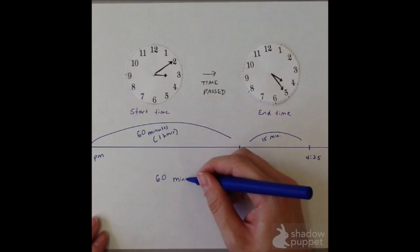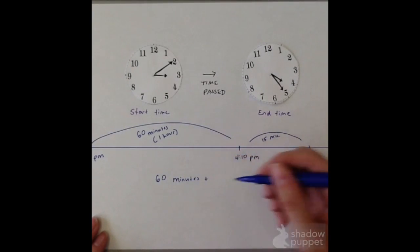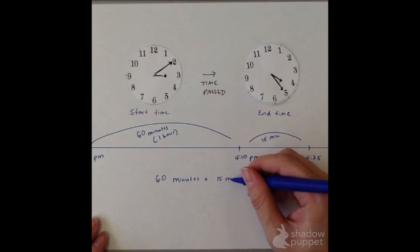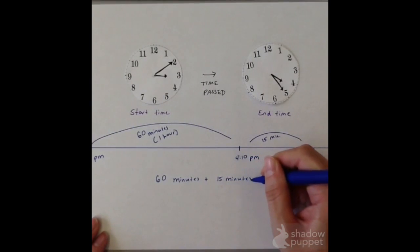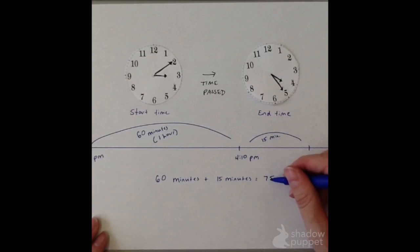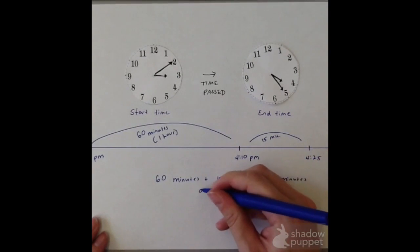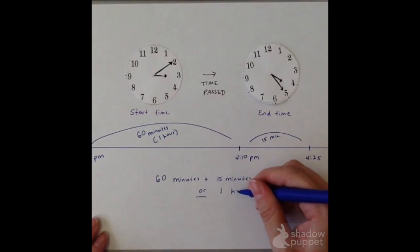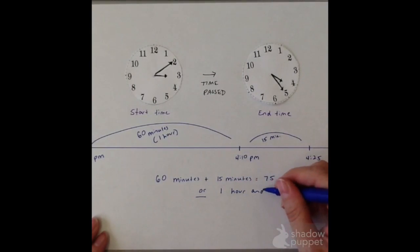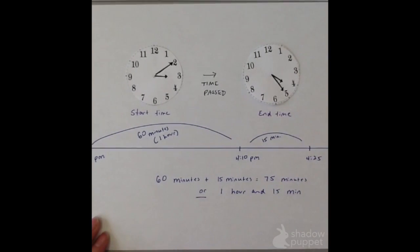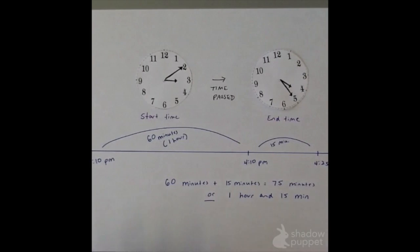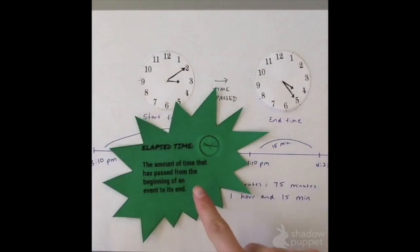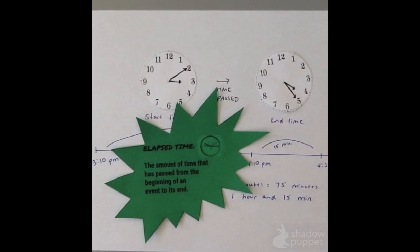So then I can take that 60-minute time segment and add that to 15 minutes. And once again, I'm going to find myself getting a total of 75 minutes, which is my elapsed time. Now I can actually convert this to 1 hour and 15 minutes, because 60 minutes is equal to an hour, and then I have my remaining 15 minutes. So this is how you can calculate elapsed time by adding up in chunks on an open timeline.